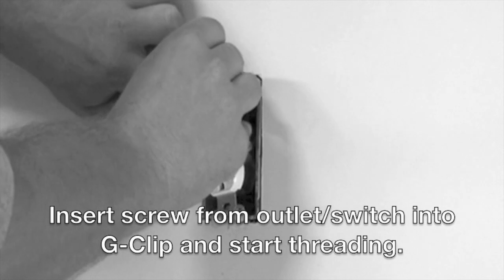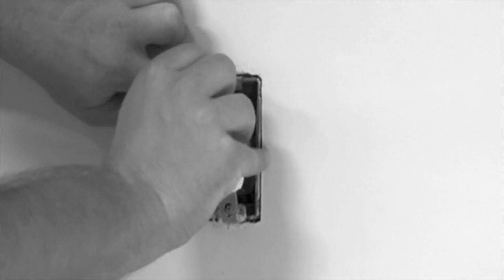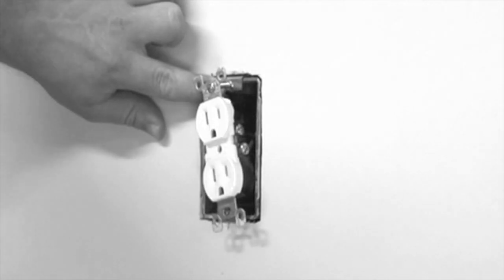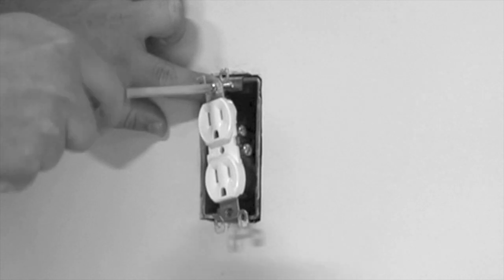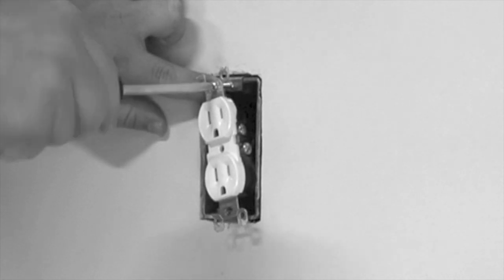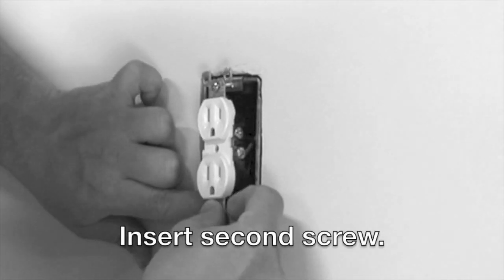Insert the first screw from the outlet into the G-Clip and start threading. Repeat this process with the bottom screw.